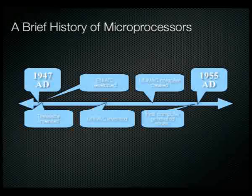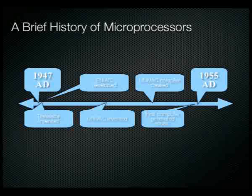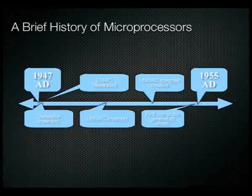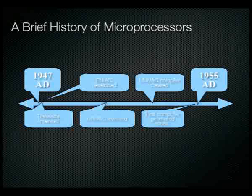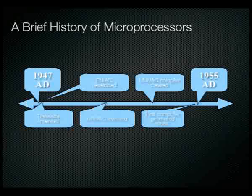In 1947, the transistor was developed at Bell Labs. In 1951, the first commercially designed and sold computer, the UNIVAC-1, was created. Dr. Grace Hopper designed the UNIVAC-1 compiler, first available in 1955. No longer did programmers have to write in machine code and punch binary cards. A high-level, more abstracted language could now be used, with the compiler generating the binary code automatically — a great innovation.